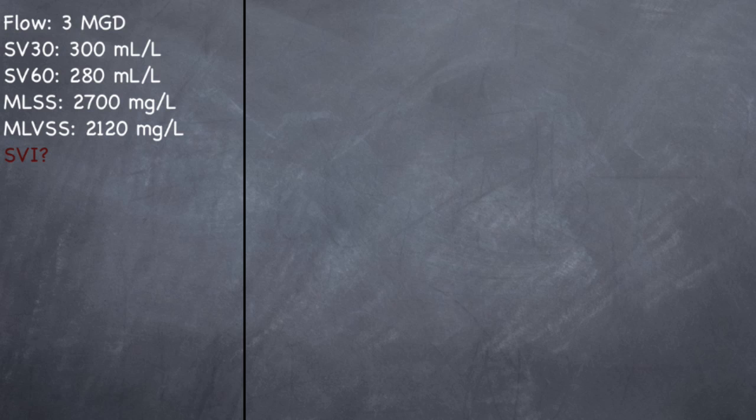The formula for that is your SV30 times 1000 divided by your MLSS milligrams per liter, and that will give you your SVI. I don't think they give you this formula on the cheat sheet, so it's important that you memorize this. Just write it down this way and memorize it that way, and you'll have no problem doing the problem when they give it to you.